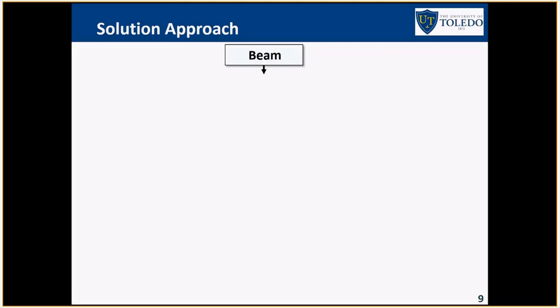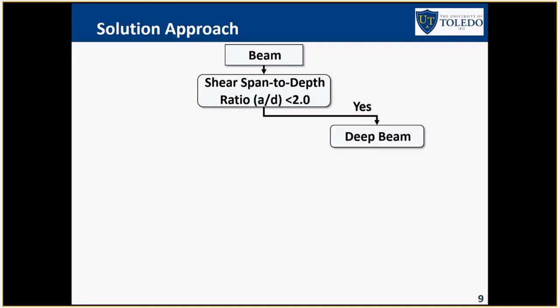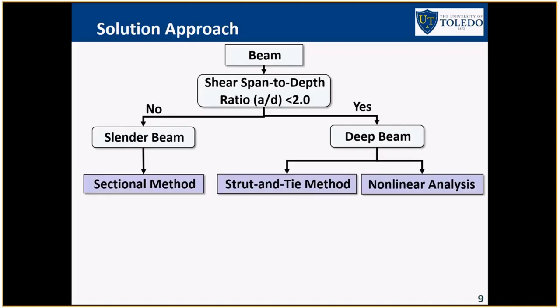So if you have a beam, the first thing you should do is calculate shear span to depth ratio, which is A to D, which I showed you previously. This ratio can be less than two or it can be more than two. Depending on this critical number, you decide whether it's deep or not. If it's less than two, it's a deep member. If it is more than two, it's a slender member. If it's a deep member, you have two options, which both of them we tried, and I'm going to show you the results. You can analyze it using strut-and-tie method as well as nonlinear analysis. Our focus is strut-and-tie, but also we did nonlinear analysis that I'm going to present the results.